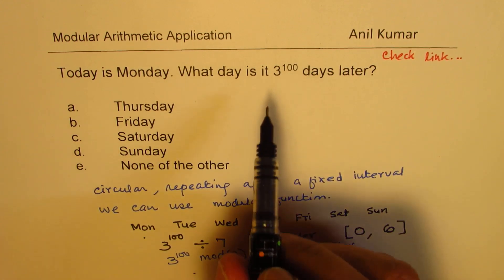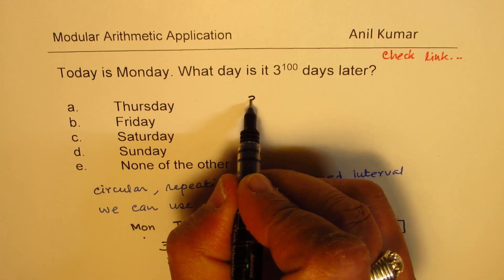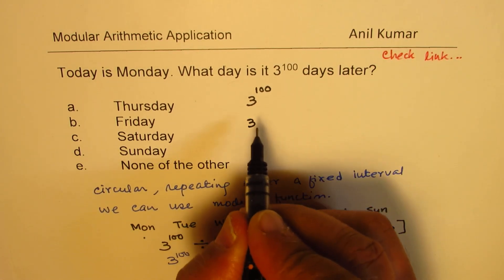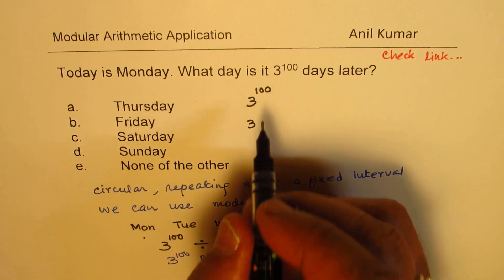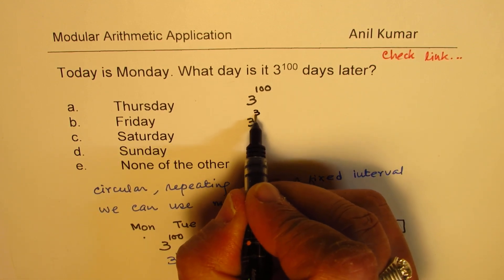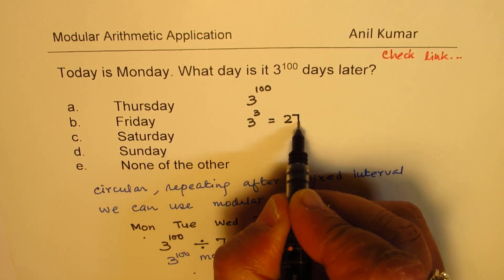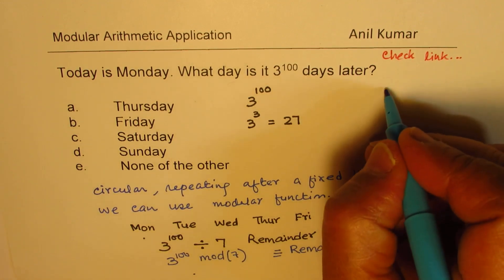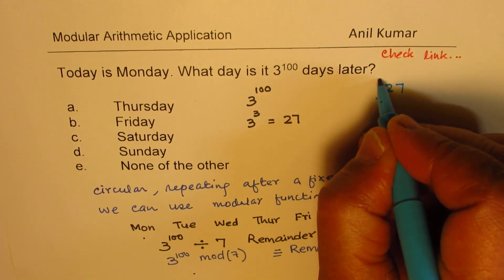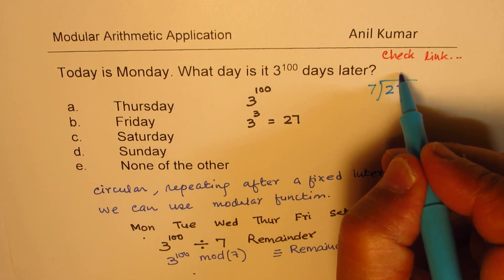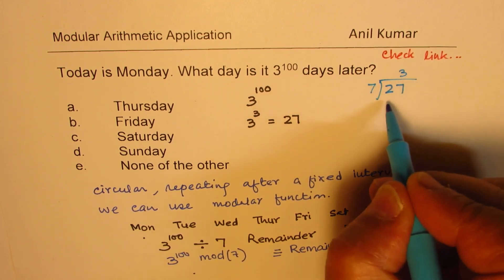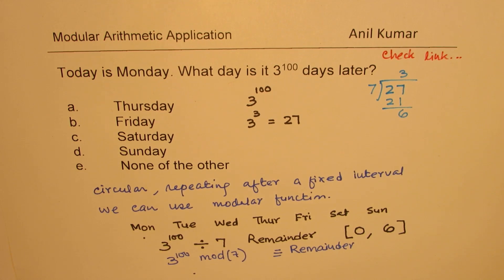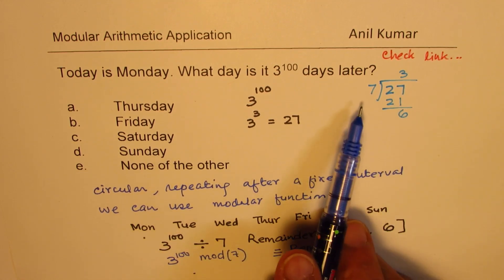Now, how can we do it? The idea is kind of like this — we need to somehow understand what three to the power of 100 is. Let's begin with a number very close to seven: three to the power of three, which is 27. See what happens when we divide 27 by seven: seven times three is 21, and we get a remainder of six.